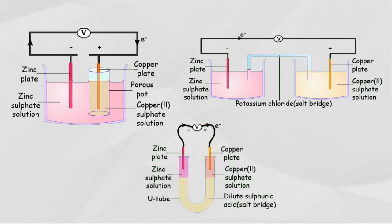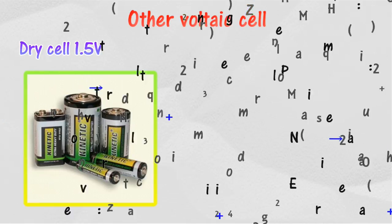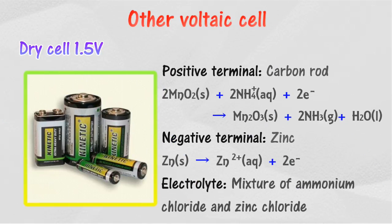There are also voltaic cells which are normally used, such as dry cell, lead acid accumulator, and alkaline cell. For dry cell, the negative terminal is zinc while the positive terminal is carbon rod. The electrolyte used is the mixture of ammonium chloride and zinc chloride.